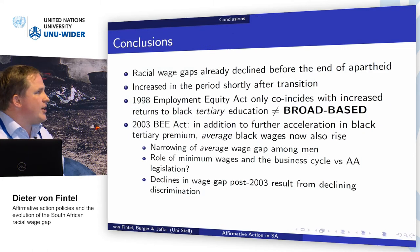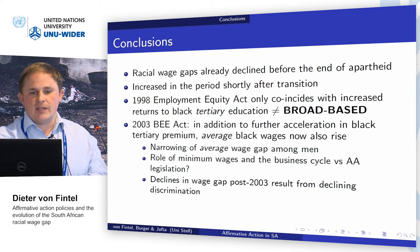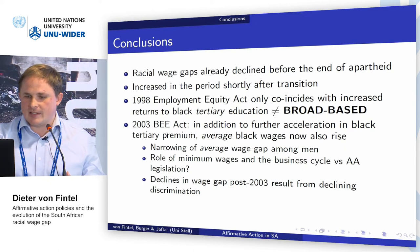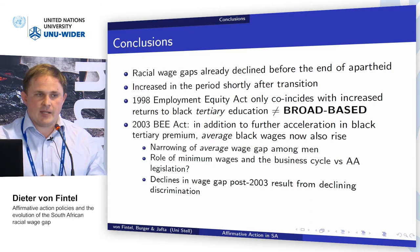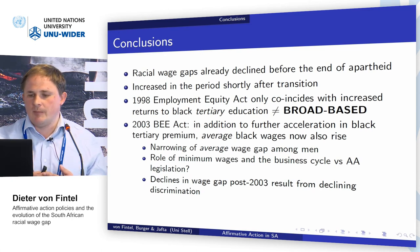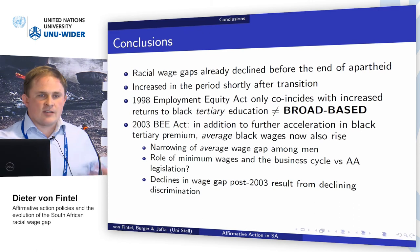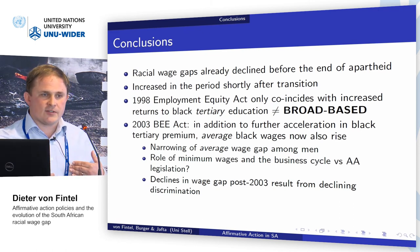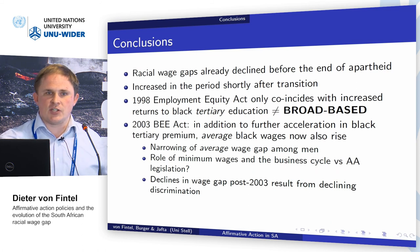So what do we know? Racial wage gaps declined before the end of apartheid. They increased in the period shortly after the transition. We do not see a massive effect for the 1998 Employment Equity Act, even though one would expect it. Even with returns to tertiary education increasing for the black population, this gives us an idea that perhaps these reforms weren't broad-based enough — they weren't affecting the entire distribution. It's only the 2003 BEE Act that starts seeing a change in one component of discrimination, but not all components, suggesting that even this hasn't had the desired effect to change the face of the labour market in a big way.